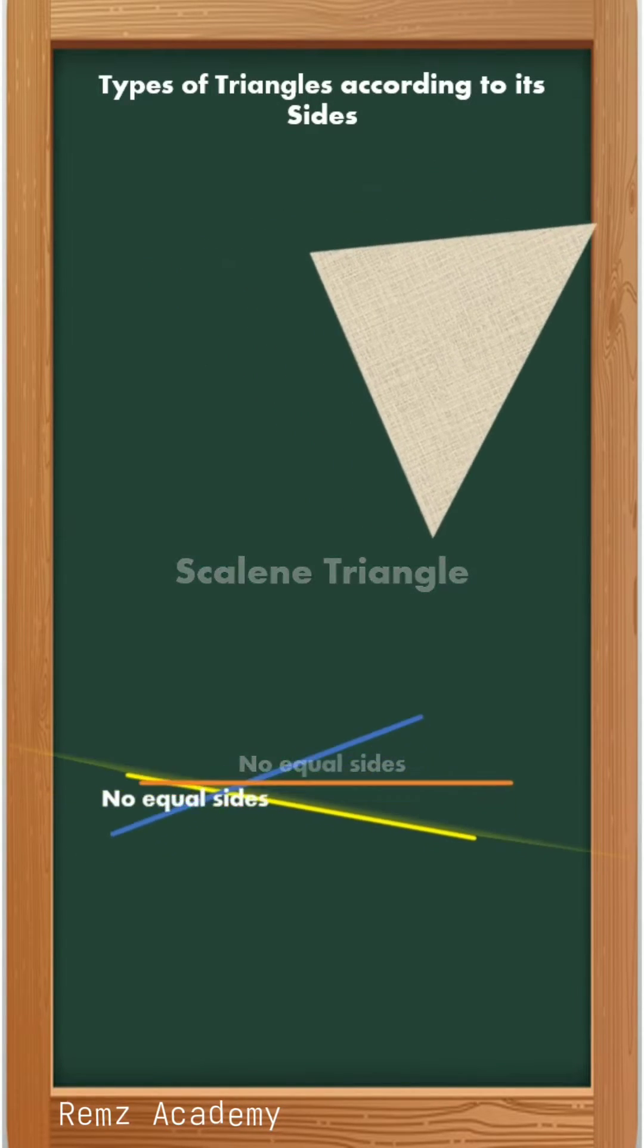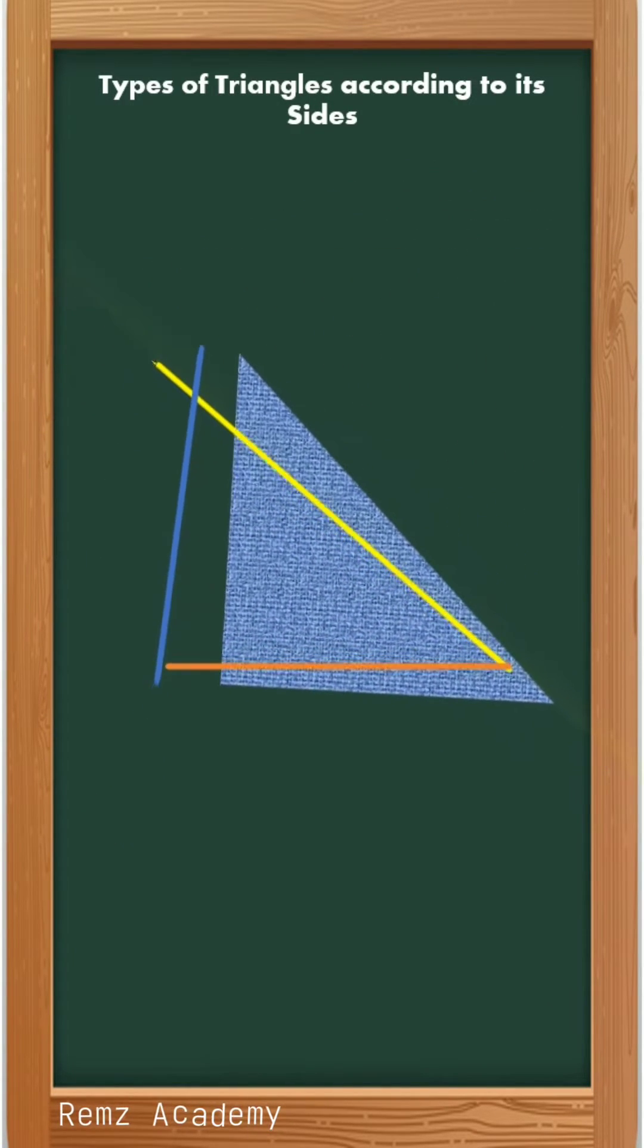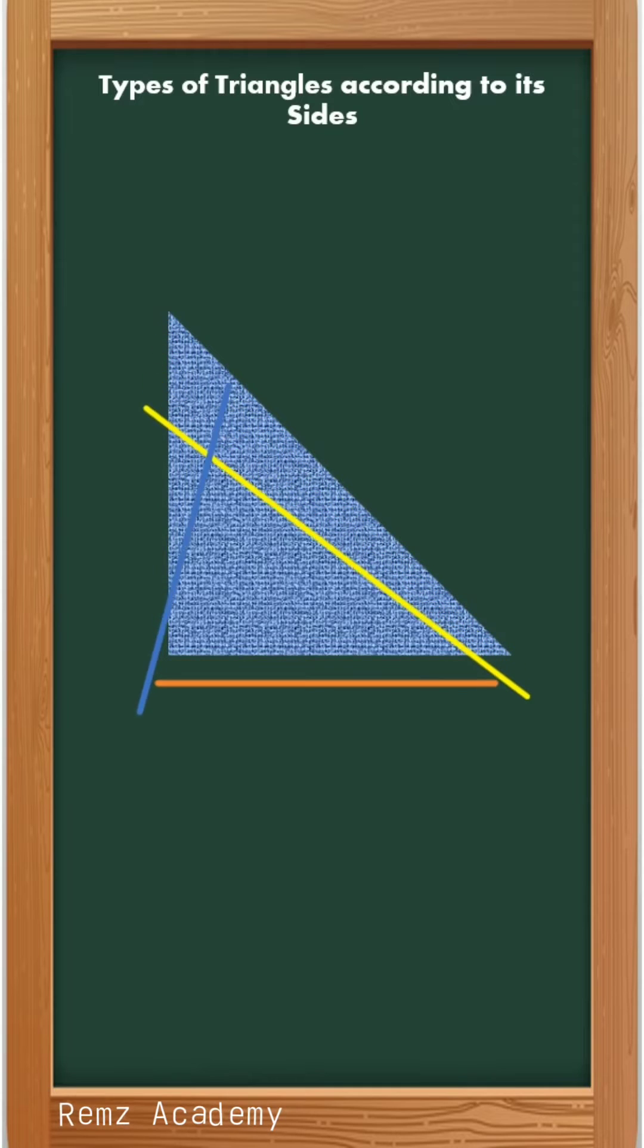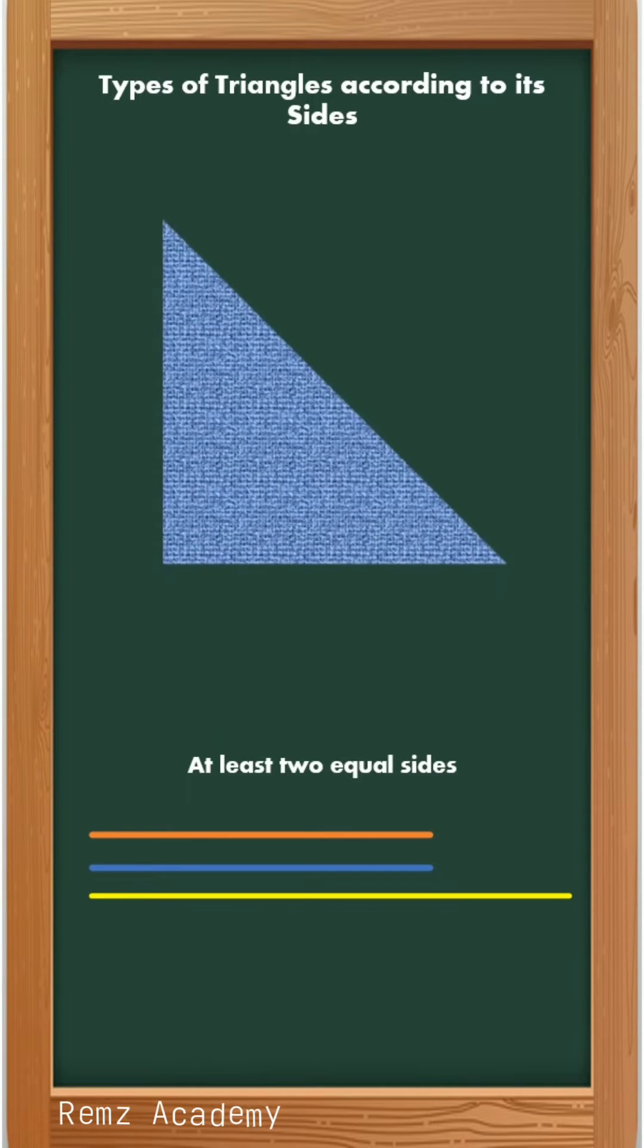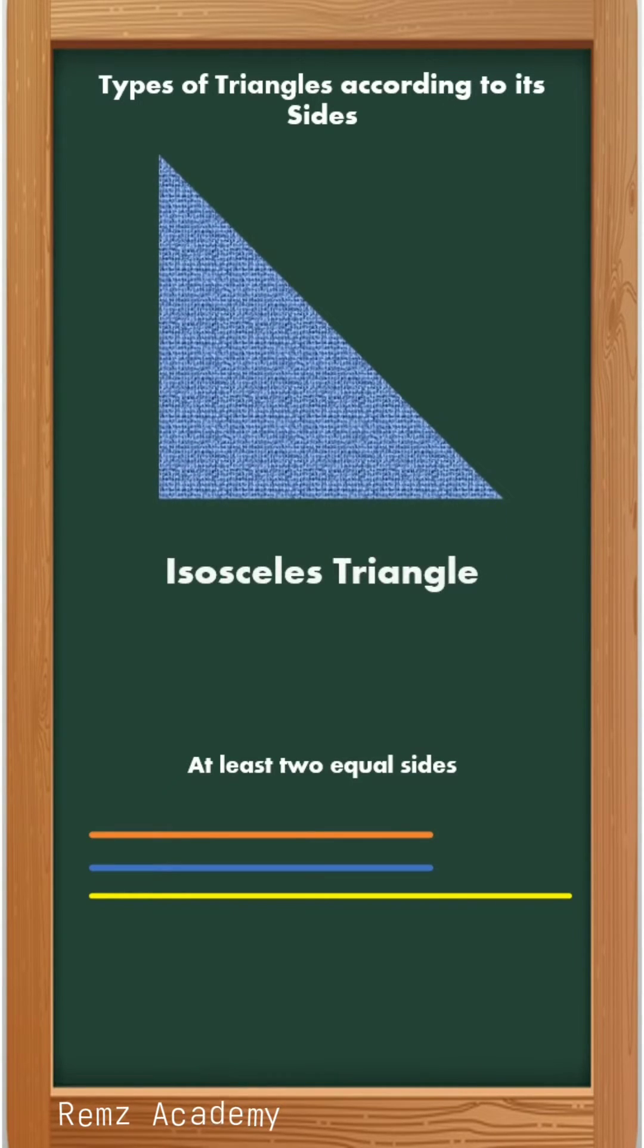Let us move on to our next triangle. Once again, we will compare its sides. In this triangle, two sides are equal. This is an isosceles triangle.